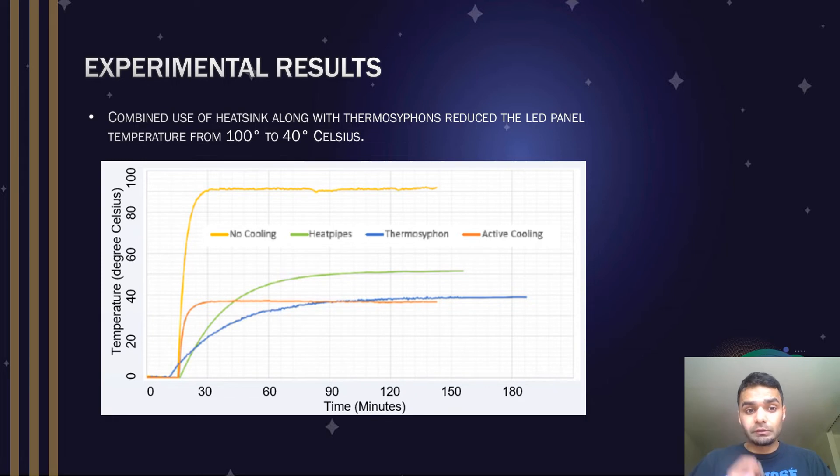Our experimental results showed that with no cooling techniques, the back panel reaches about 100 degrees Celsius. If we add thermosiphons and a heat sink, the temperature is reduced to almost 40 degrees Celsius. With just a heat sink, it reaches about 58 to 60 degrees Celsius, and the additional 20-degree reduction is due to the thermosiphons.